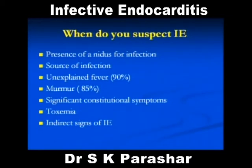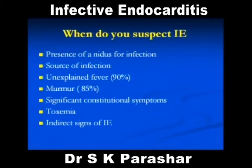When do you suspect infective endocarditis clinically? Presence of a nidus of infection — any valvular lesion, congenital lesion, prosthetic valve — it is very rare to have it on a normal heart. Source of infection: the patient might have had surgery, catheterization, or extensive dental manipulation. Unexplained fever in 90 percent of cases, murmur in about 85 percent, significant constitutional symptoms — it is a very serious disease — toxemia, and some indirect signs. These are the things when you suspect it; not that any case of fever you think of infective endocarditis.